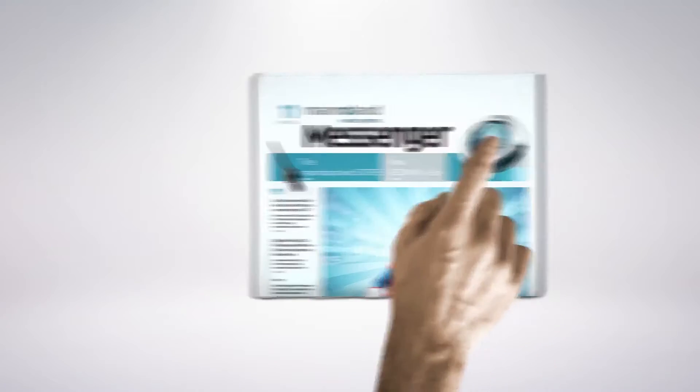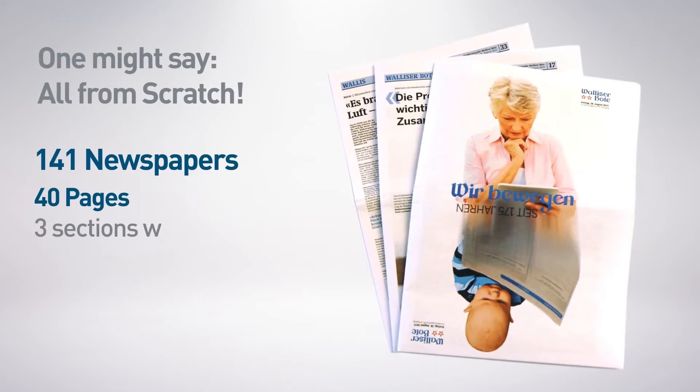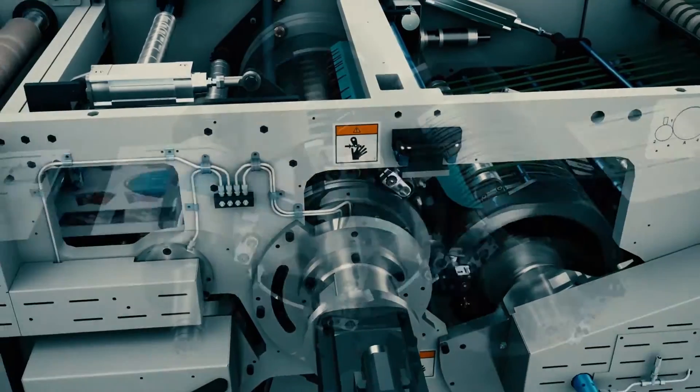The new product has a new structure: more pages, different content. 141 newspapers with each 40 pages, 3 sections, 2 times 16 and 1 times 8 pages. And again, it starts.